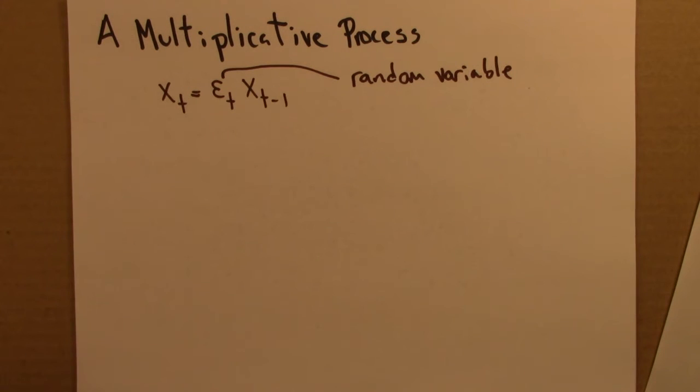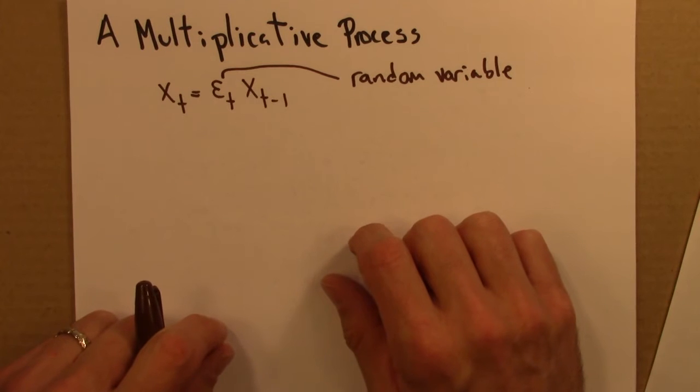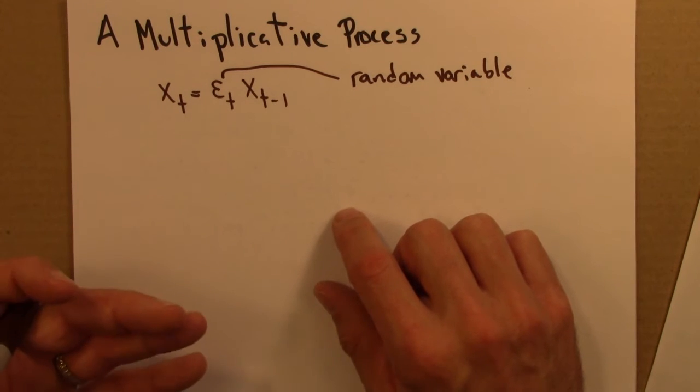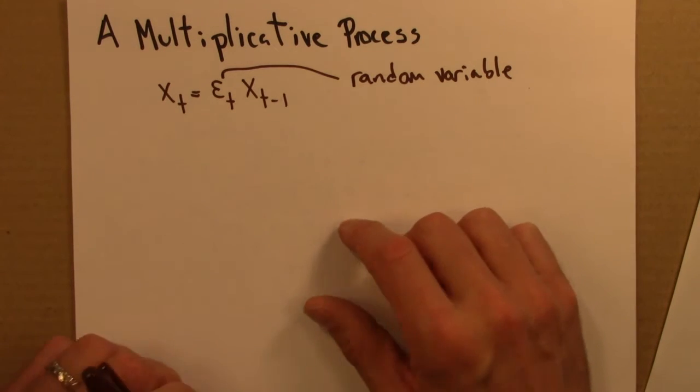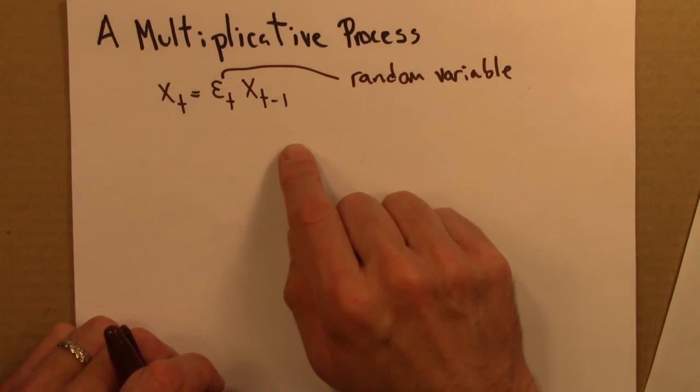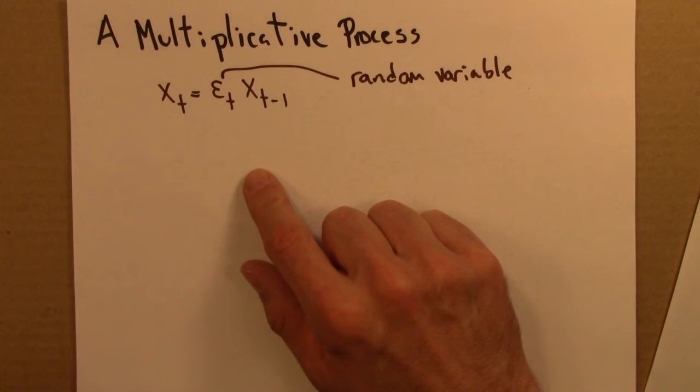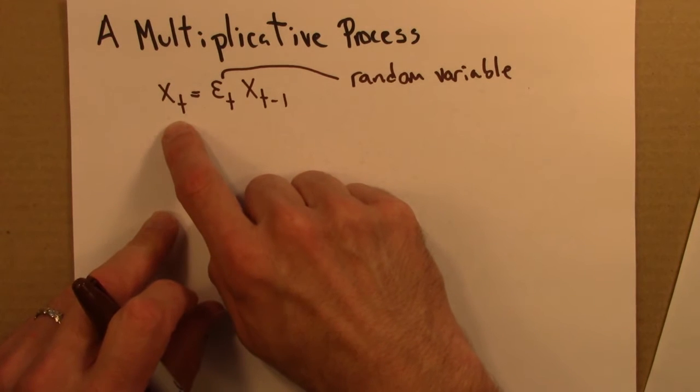So maybe we start with an initial investment, and at every step, every year, every month, it grows by some percent. And the percent by which it grows in a year is a random variable. It's not the same every year. Hopefully it's a number that's bigger than one. And so we start with a number, x0, and then we multiply that by a random variable, another random variable, another random variable, and so on. And after a bunch of years, t, we end up with this.